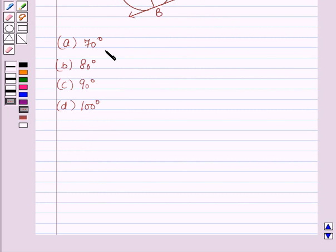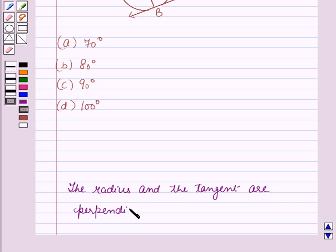Before starting with the solution, we should know a key result: the radius and the tangent are perpendicular to each other at the point of contact.